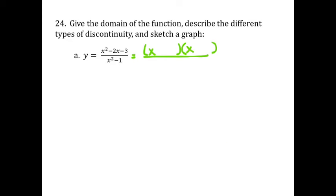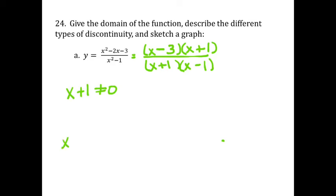In order to tell what types of discontinuity we're going to have, we need to factor both the numerator and the denominator. Factoring the numerator gives x plus 3 times x minus 1, and the denominator is a difference of two squares: x plus 1 times x minus 1. Looking at the denominator, x plus 1 cannot equal 0 and x minus 1 cannot equal 0, so x cannot equal negative 1 and x cannot equal positive 1. That gives my domain: all reals, x not equal to negative 1 or positive 1.